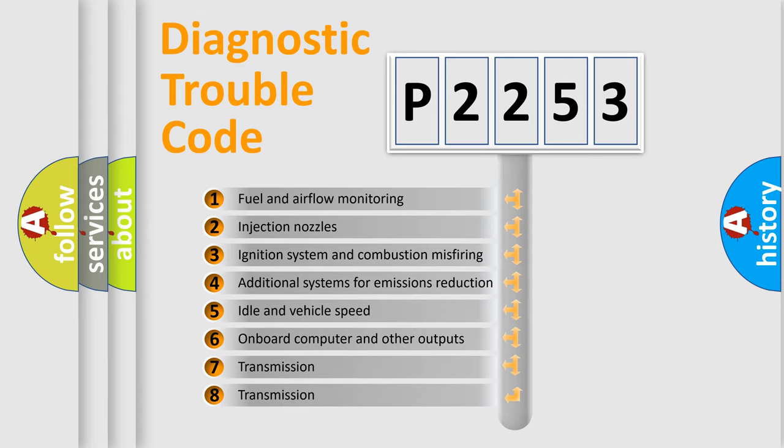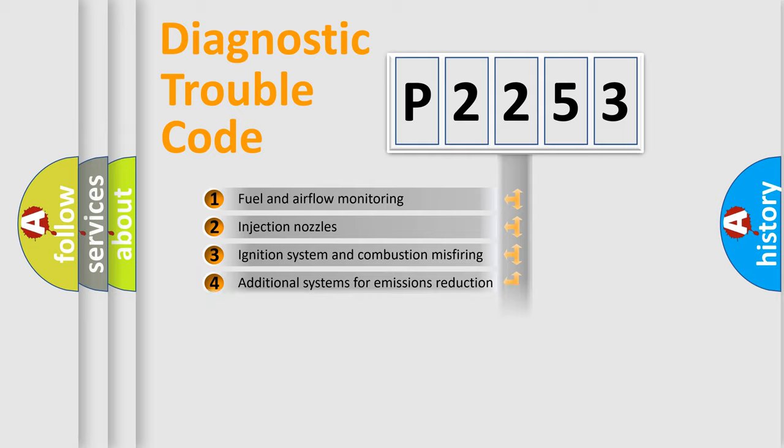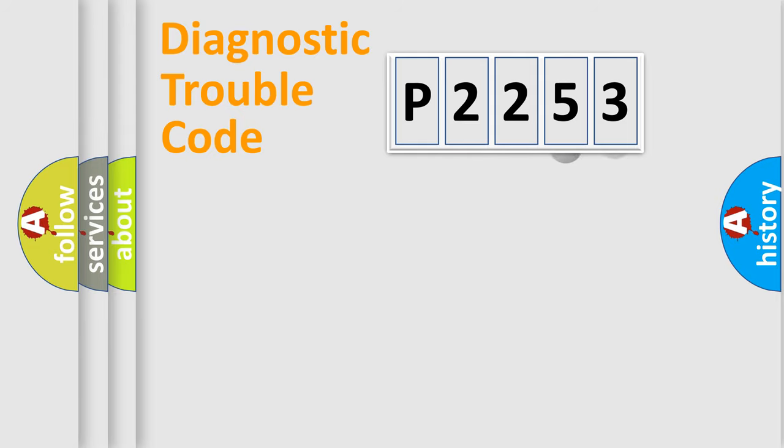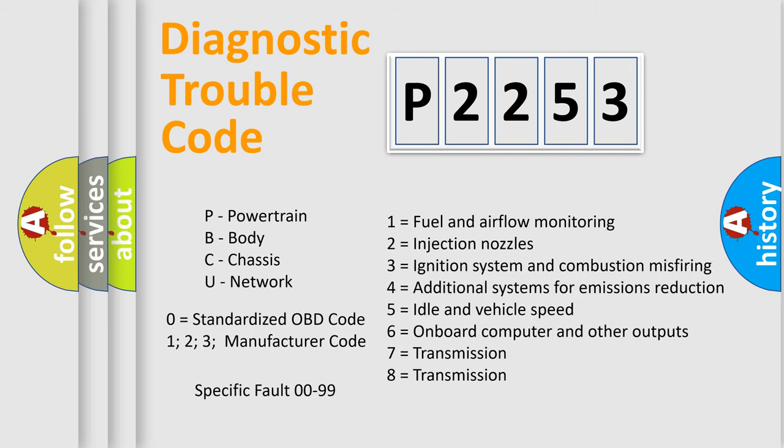The third character specifies a subset of errors. The distribution shown is valid only for the standardized DTC code. Only the last two characters define the specific fault of the group. Let's not forget that such a division is valid only if the second character code is expressed by the number zero.